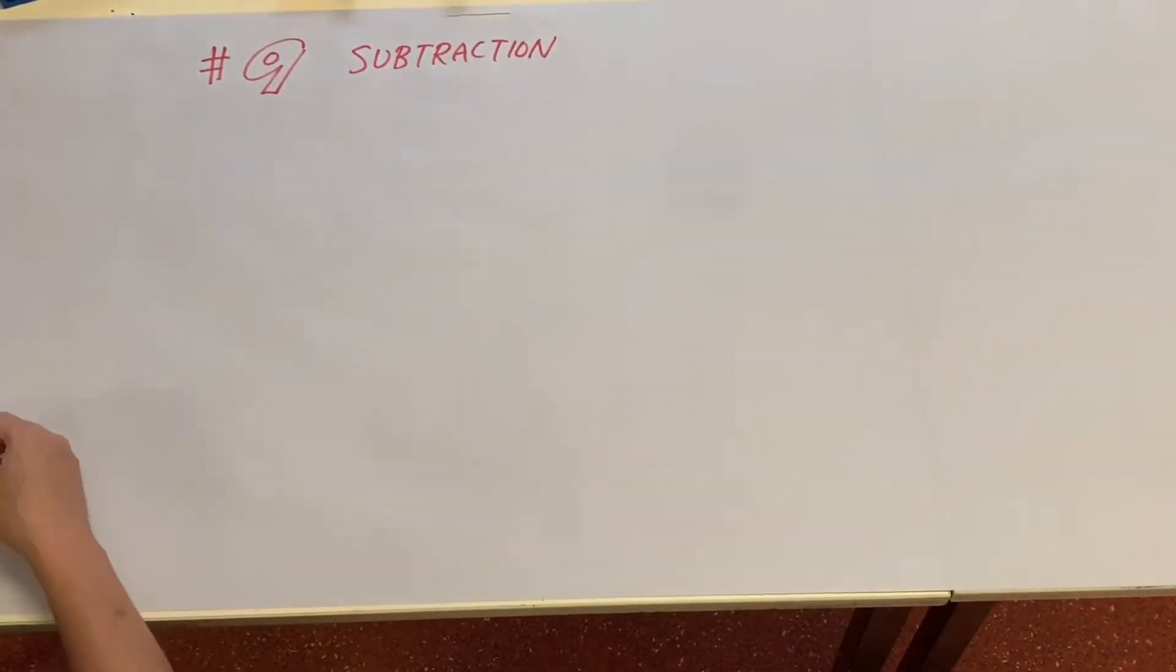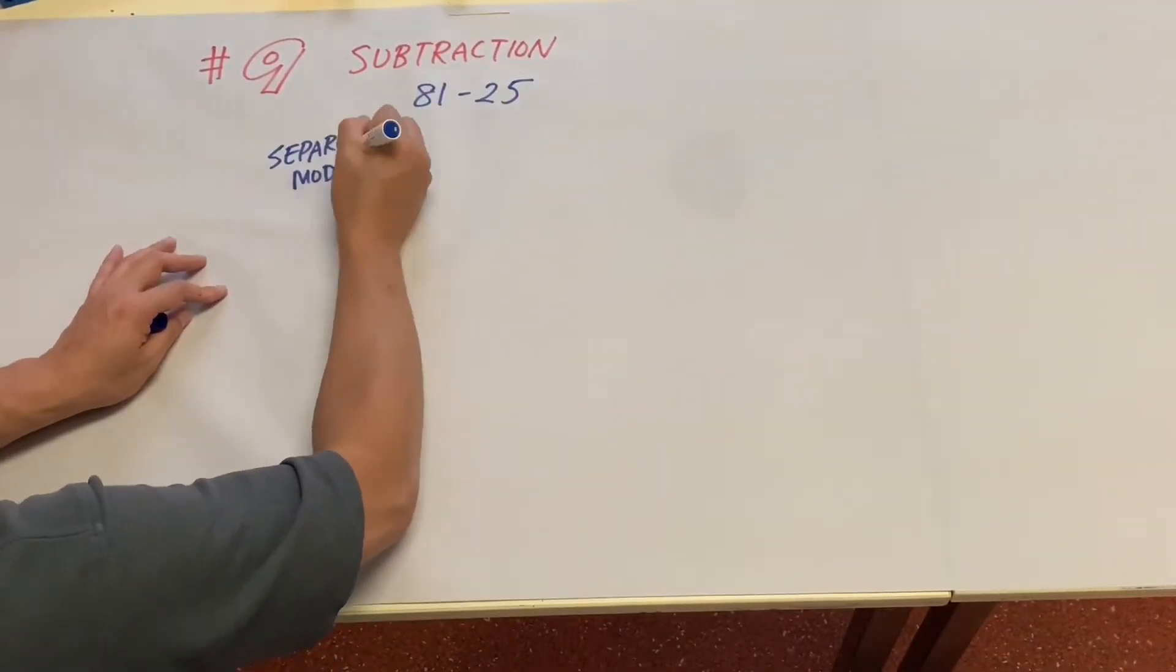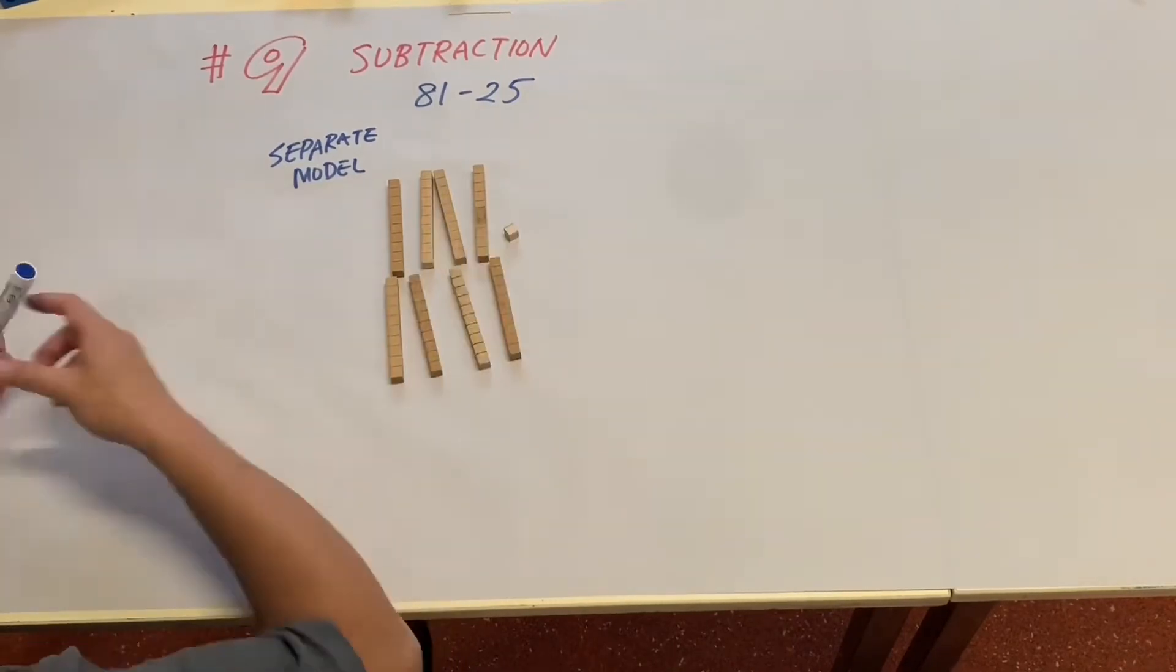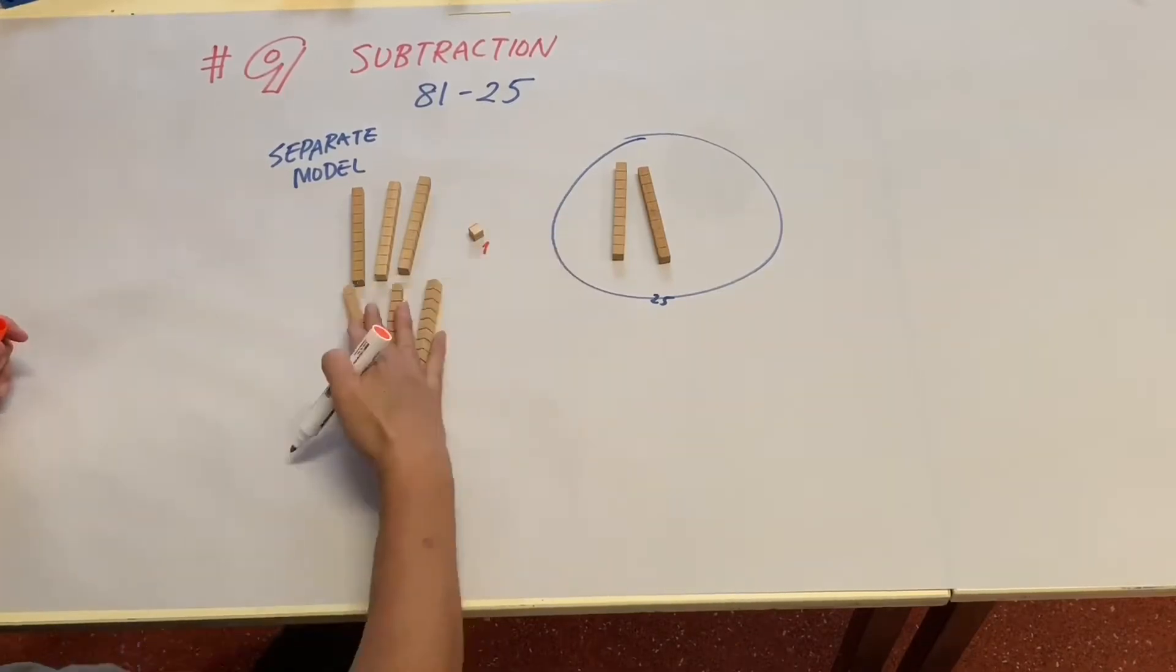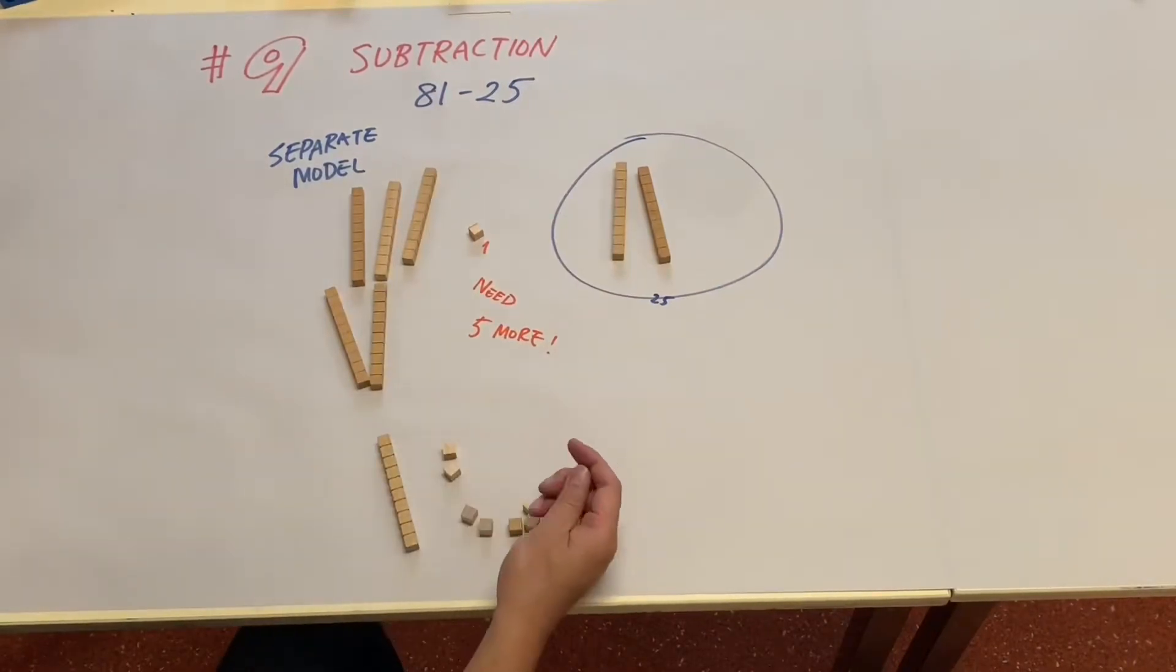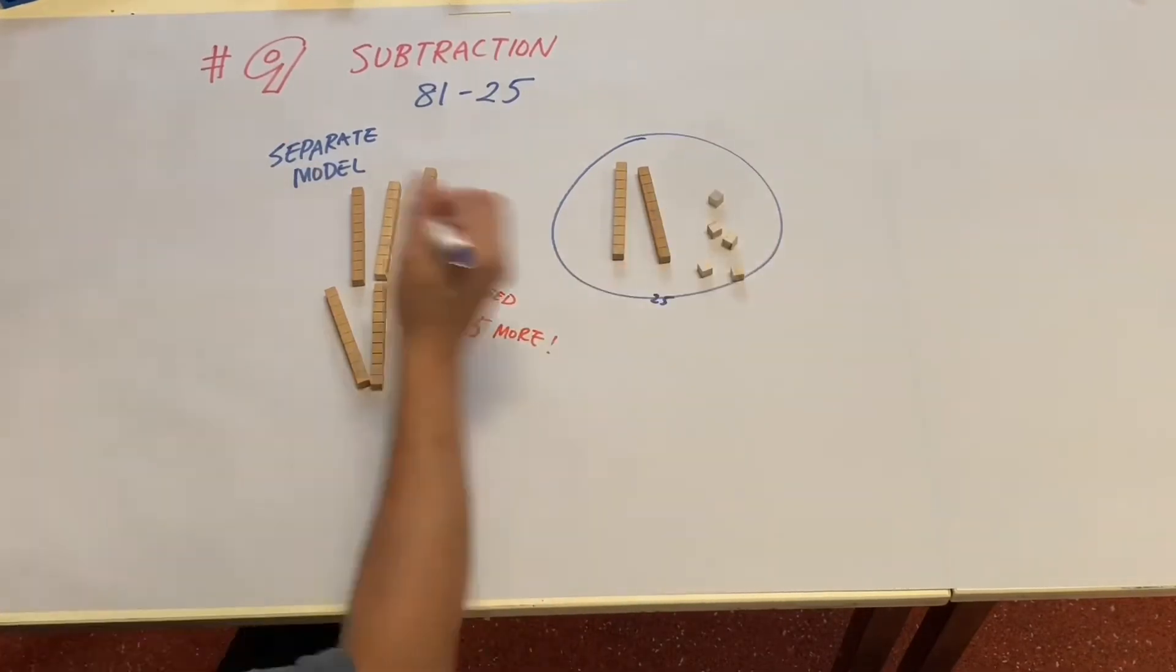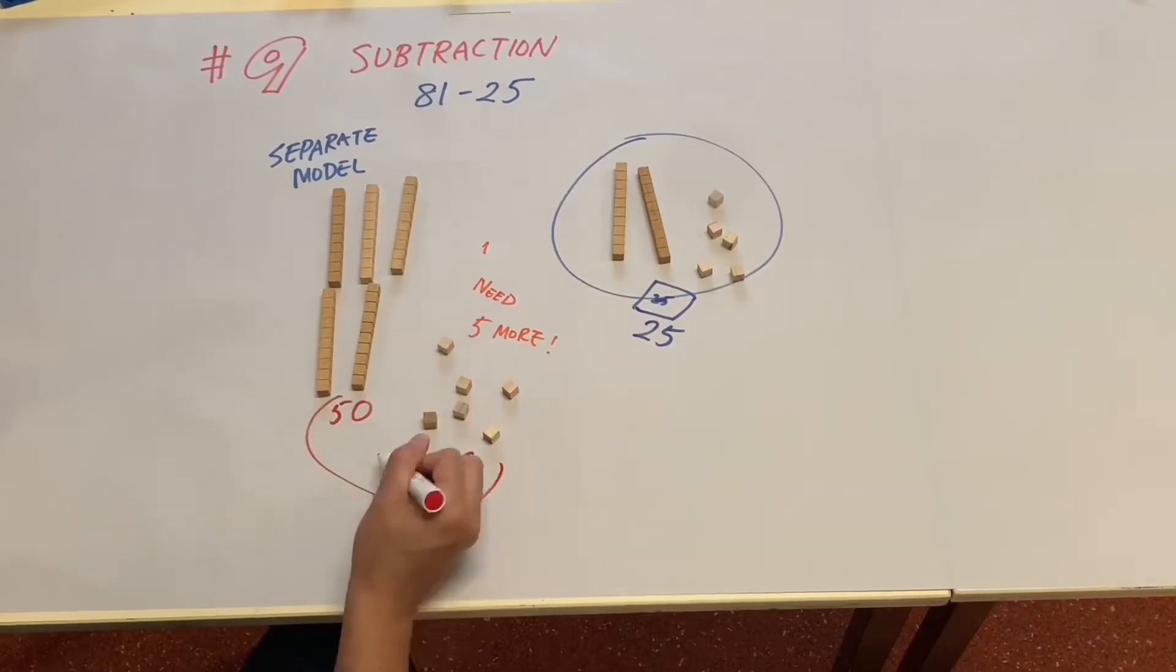Video number nine we're going to practice subtraction using the partial model. So how does it work? Let's use a separate model. So we have 81, we're going to take 25 out of it. So now we have only one, we want to take five. Well, I meant four more.